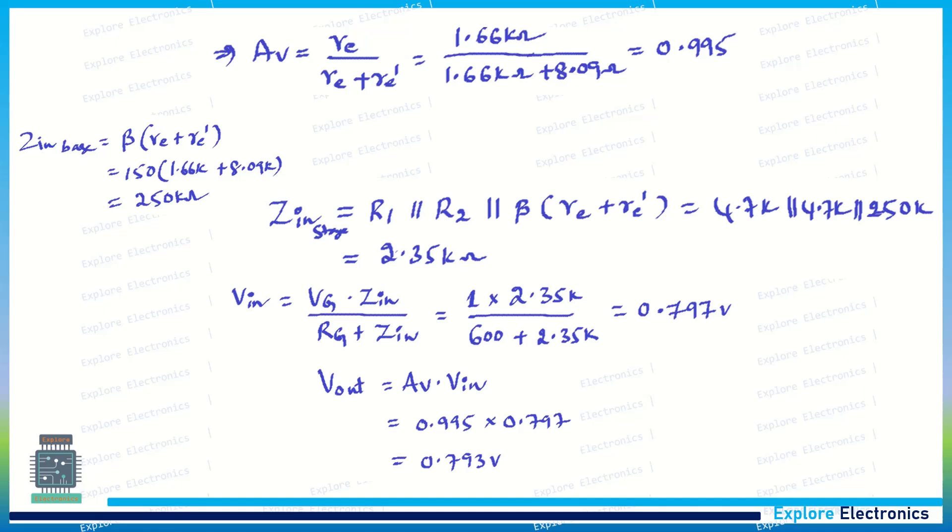Vin is 0.797V. Now we can calculate the voltage Vout = Av × Vin. Av we know is 0.995 from the first part of the calculation, and Vin = 0.797V.